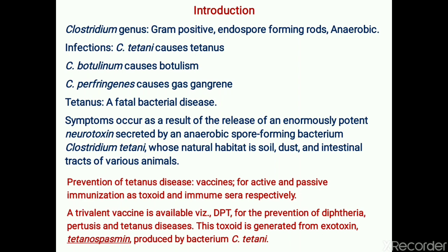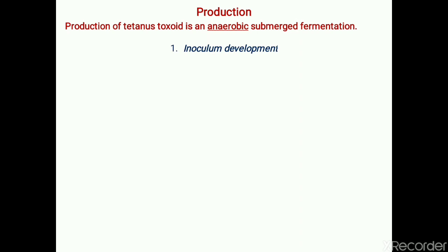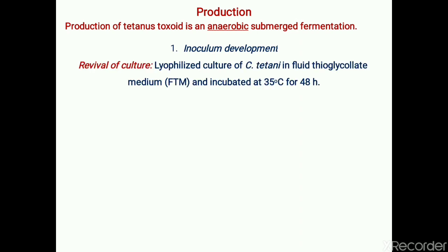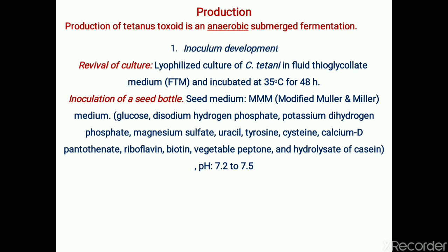The tetanus toxin is generated from an exotoxin called tetanospasmin, which is produced by the pathogen Clostridium tetani. The production method is an anaerobic submerged fermentation process. The first step is inoculum development, in which the lyophilized culture of Clostridium tetani is revived in sterile fluid thioglycolate medium and incubated at 35°C for 48 hours.